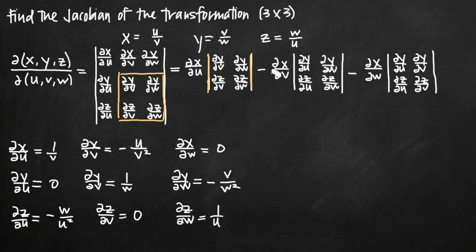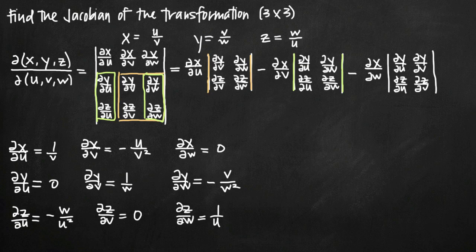According to our formula, we take the first term — the partial derivative of x with respect to u in the upper left corner — and multiply it by the 2 by 2 matrix outside of its own row and column. Then we subtract using the second term, the partial derivative of x with respect to v, multiplied by the 2 by 2 outside its row and column. We do the same for the partial derivative of x with respect to w. That's how we break down a 3 by 3 matrix into 2 by 2 matrices.